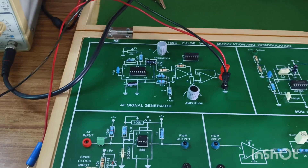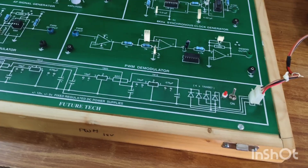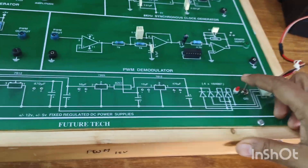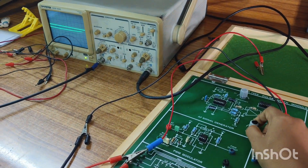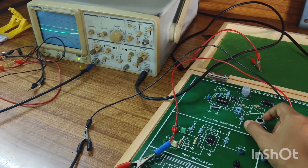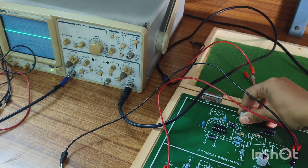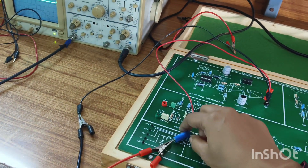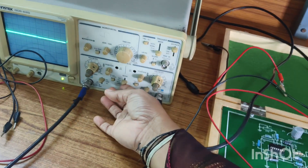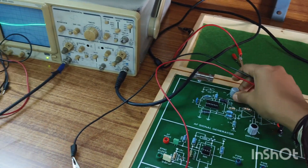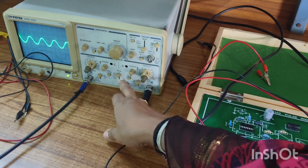I have connected the AF signal — positive to here and ground here. Just switching on the adapter and the kit. We need to adjust the amplitude. Now I am putting it in channel one to get the signal. See — please note it is now in channel two, now switching to channel one. Adjusting amplitude and frequency.